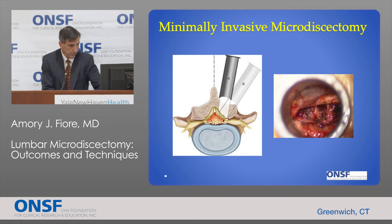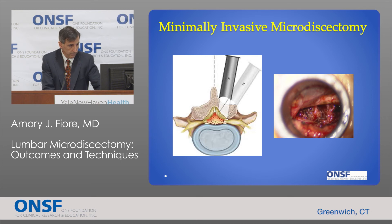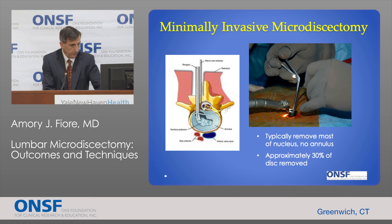This gives you an idea of the trajectory — I'm looking through that tube. You do have to remove a portion of the lamina, which is the bone that overlies the sac of nerves, and that's why discectomy is often called a laminectomy, because a laminectomy is part of a discectomy. Once you have the tube in and do the laminectomy, we use different instruments like pituitary rongeurs, which are grasping instruments, to reach down inside and grab pieces of the disc and remove them. Typically you remove most of the nucleus and very little to none of the annulus — meaning about 30% of the disc is removed. You certainly do not remove the whole disc, which is a common question people ask.